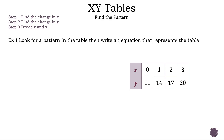Now, let's read the question. Look for a pattern in the table where we have 0, 1, 2, and 3 for X, and 11, 14, 17, and 20 for Y. Then write an equation that represents the table.